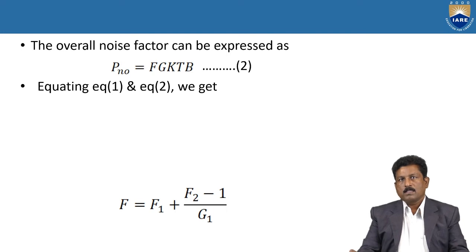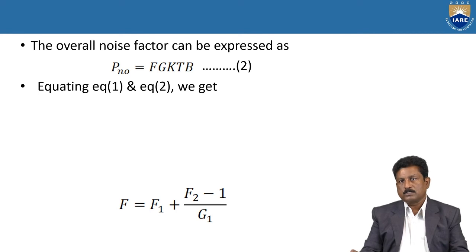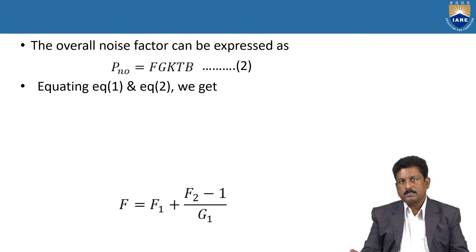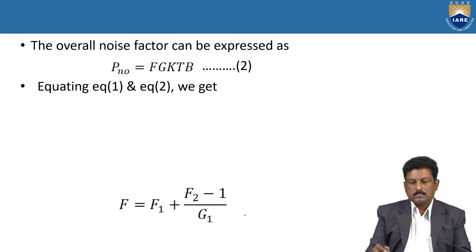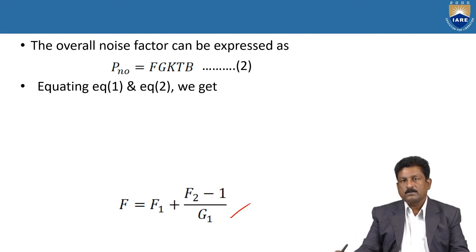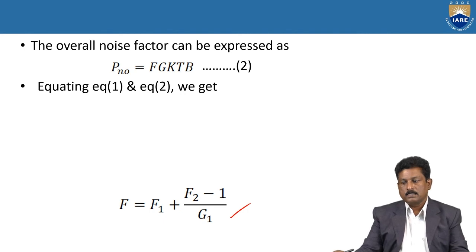The overall noise factor can be expressed as PNO = F · G · KTP. Equating this with the derived expression, we get the overall noise factor F = F1 + (F2 − 1) / G1. This is the Friis formula — the overall noise factor for two networks connected in cascade mode.